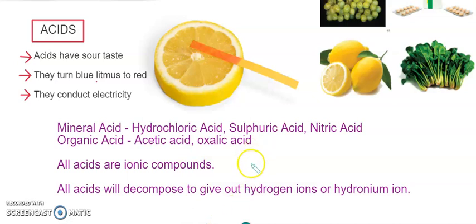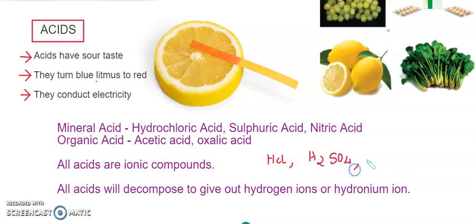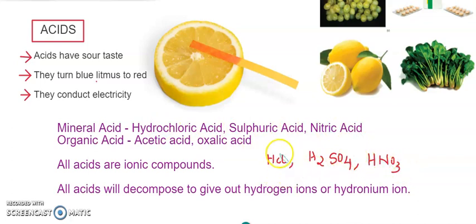The simple formulas: hydrochloric acid is HCl, sulphuric acid is H2SO4, and nitric acid is HNO3. In all three compounds the positive part is hydrogen, and the negative part can be chlorine, sulphate, or nitrate.